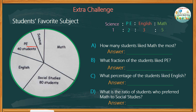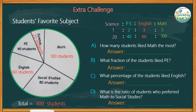The pie graph shows 40 students for PE, which comprises 2 units from the given ratio. It goes to show that 1 unit for science is equal to 20 students, 3 units for English is equal to 60 students, and 5 units for math is equal to 100 students. Adding all these numbers to 80 students who like social studies, we get a total of 300 students.